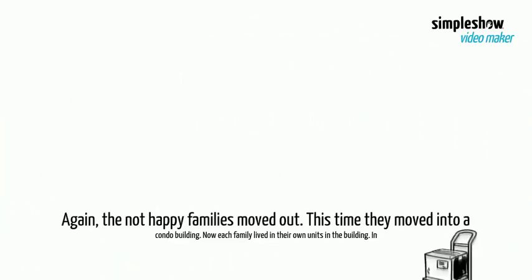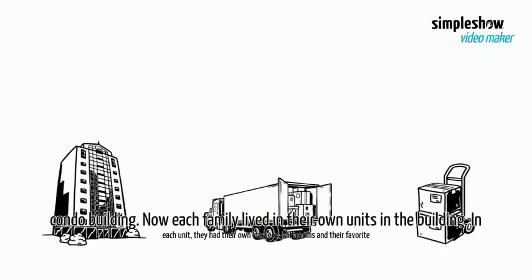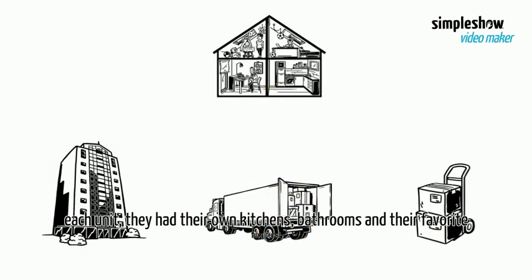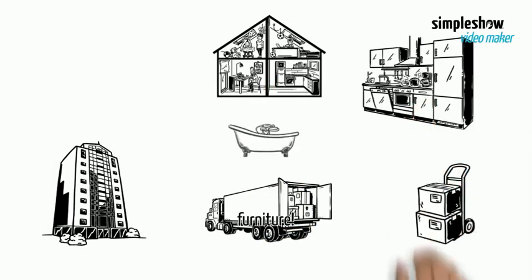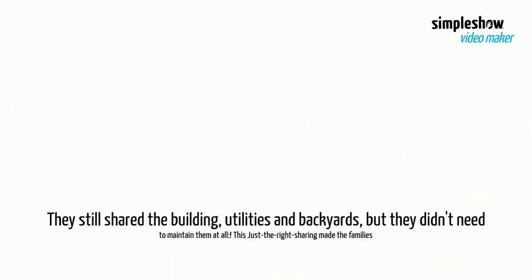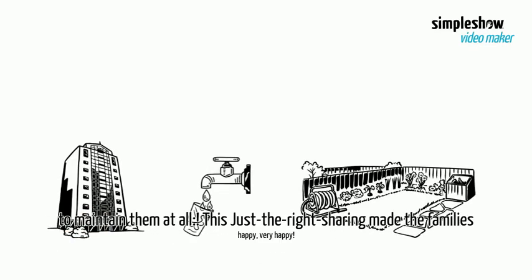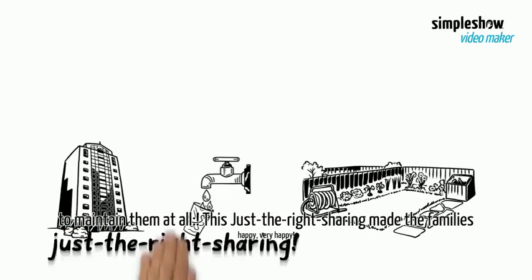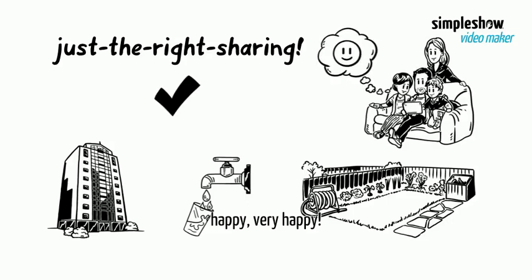The not-happy families moved out. This time they moved into a condo building. Now each family lived in their own units in the building. In each unit, they had their own kitchens, bathrooms, and their favorite furniture. They still shared the building, utilities, and backyards, but they didn't need to maintain them at all. This just-right sharing made the families very happy.